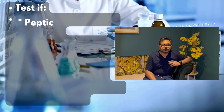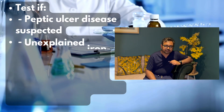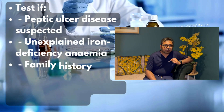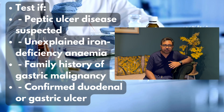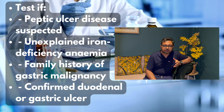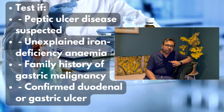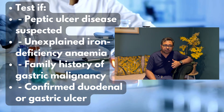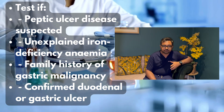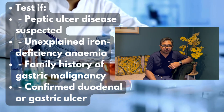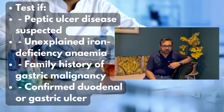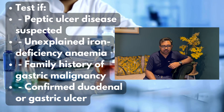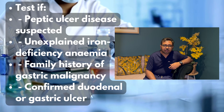When should we test a person? First, if we suspect peptic ulcers or there is a confirmed case of peptic or gastric ulcers. If there is a family history of gastric malignancy. And in cases of unexplained iron deficiency anemia.